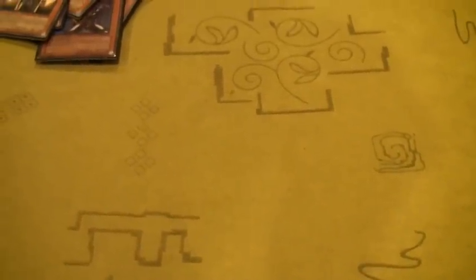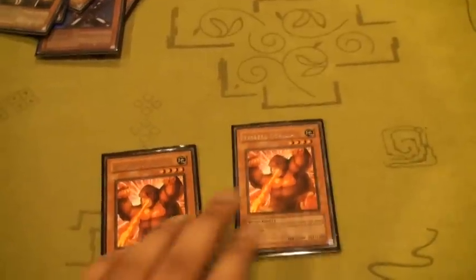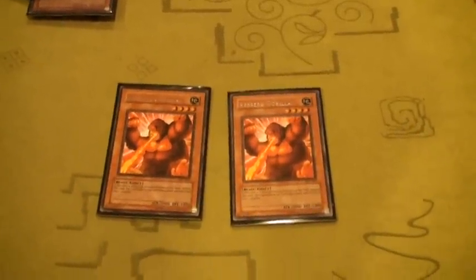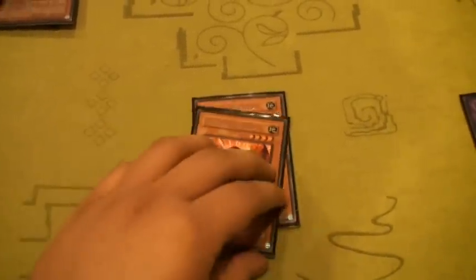And then I have a couple non-Spellcaster types. I got two Berserk Gorillas, just for you know, Beat Stick. I have Gemini Elf, Mad Dog of Darkness.